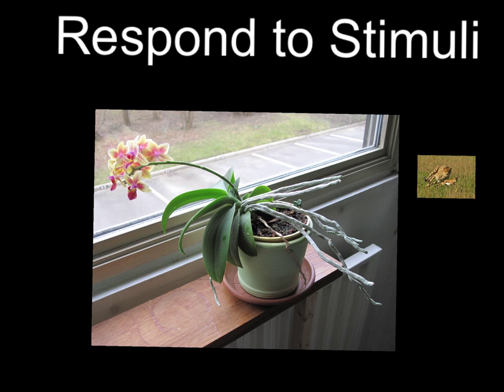All living things respond to some kind of stimuli, whether it's a complex animal, a plant, or even small single-celled organisms. We'll look at some things underneath the microscope that move toward and away from light. They also have things on the outside of their cells called chemoreceptors that allow them to move towards or away from different chemicals they sense in the water. So there's definitely some type of response to stimuli going on with every living thing.